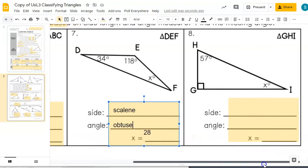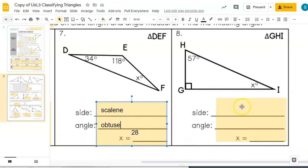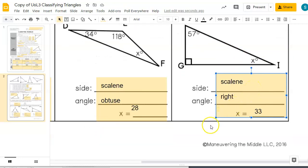This one, well, all three sides are clearly different lengths. So this one is a scalene again. The angle is a right angle. And x has to equal, well, let's see. If all three have to add up to 180, I subtract off 90, and then I subtract off my 57, I get 33. So this side is 33 degrees.